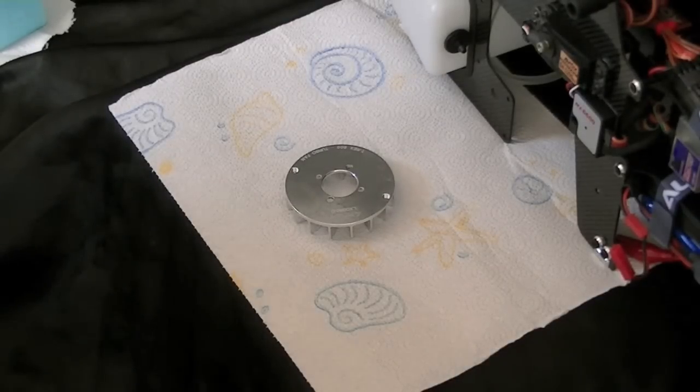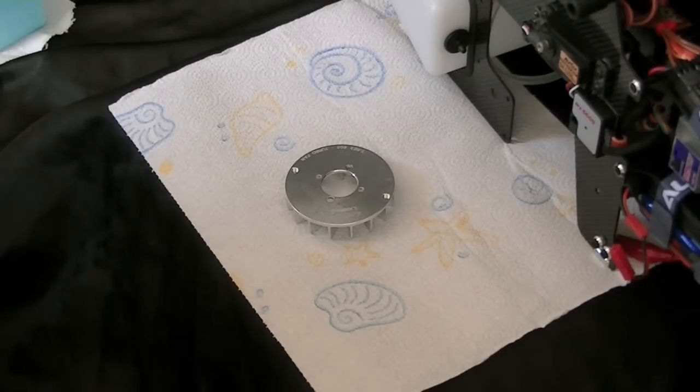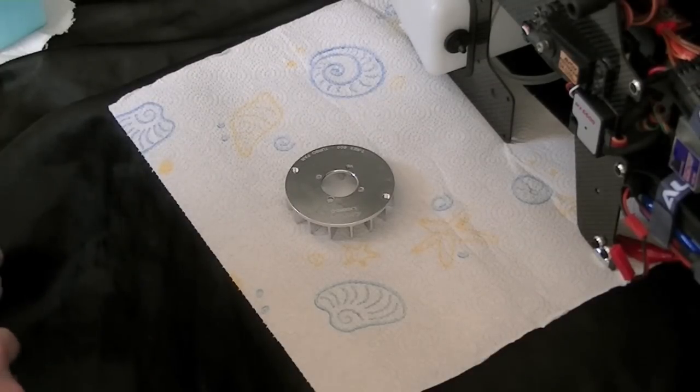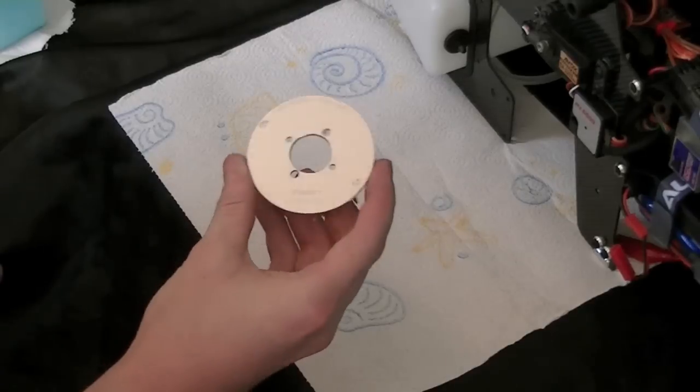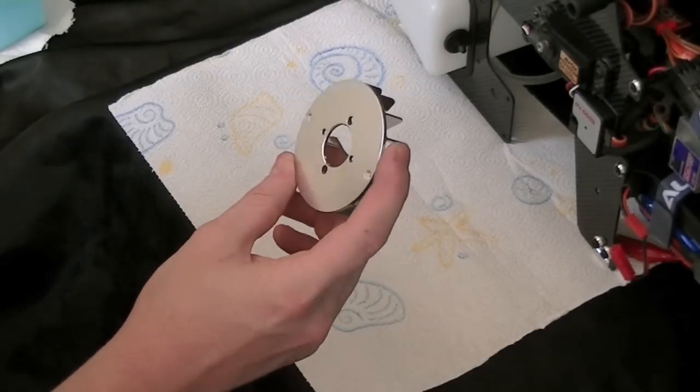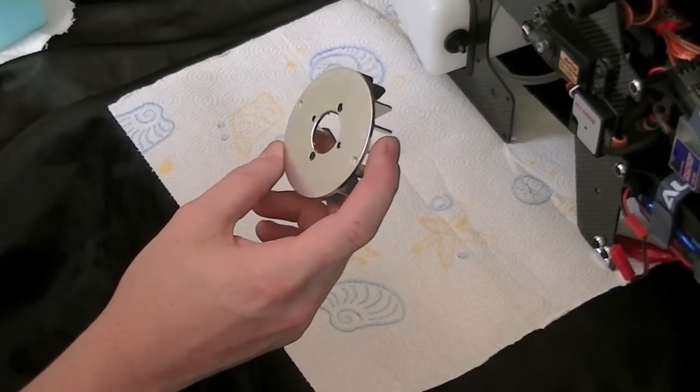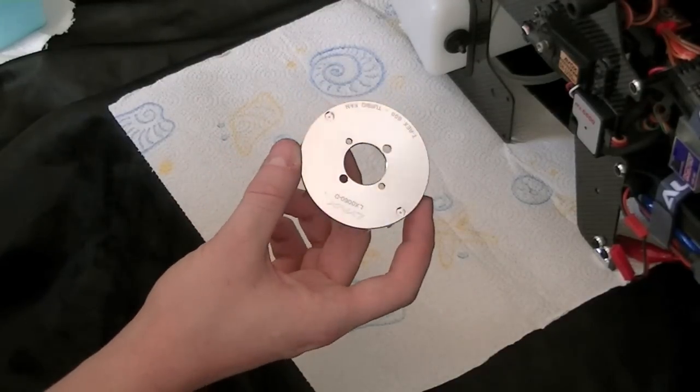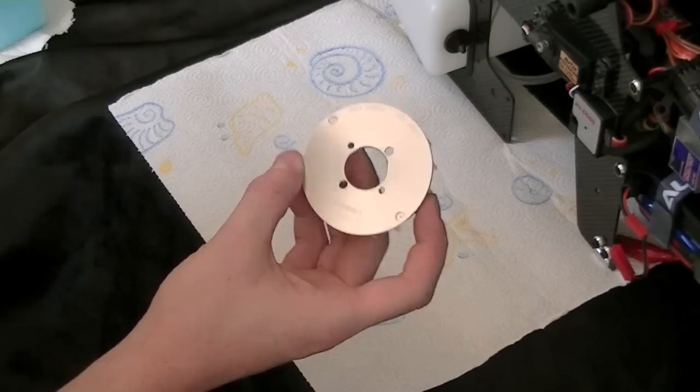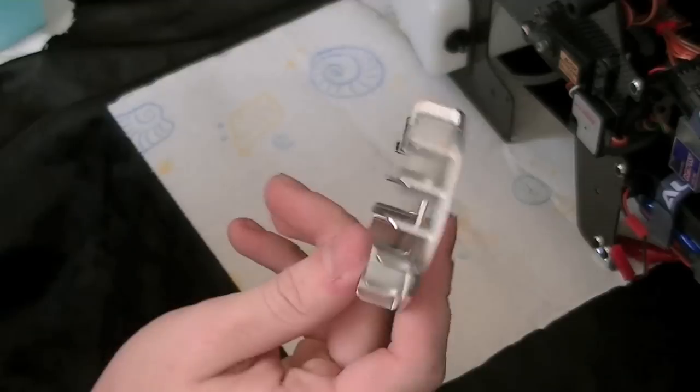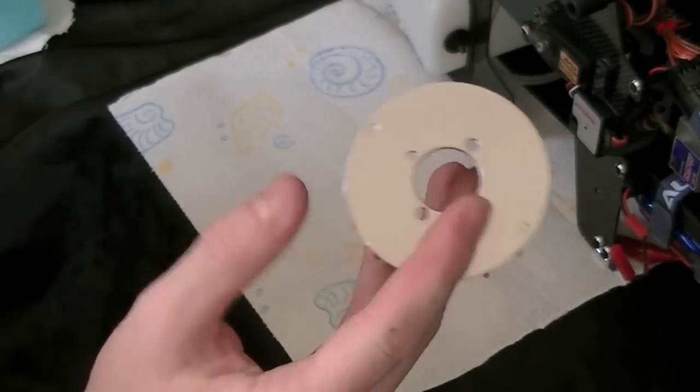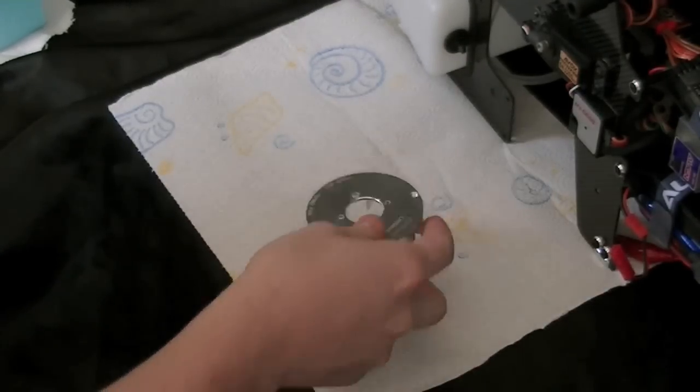For step one, all that's going to consist of is making sure our parts are clean and ready for epoxy. I wouldn't say this is a must-do, but I would also say that it is a must-do. I really think, in my personal opinion, that a nice, good, clean, dirt-free surface is a lot more adherable to an epoxy than a dirty one. This is a metal fan, it's been machined, and it's probably been through oils and grease and dirt.